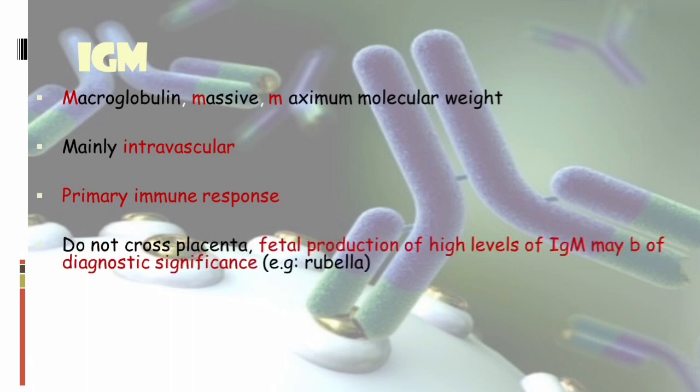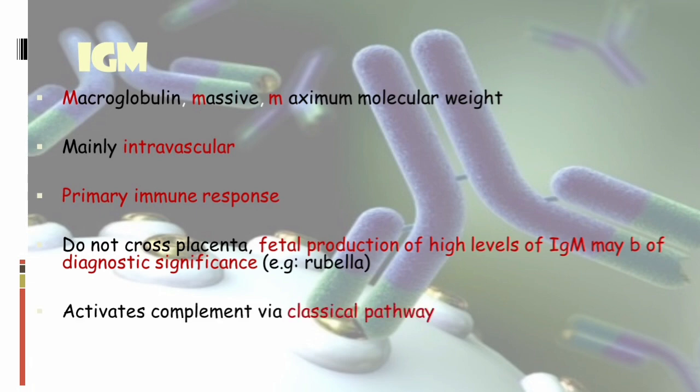IgM does not cross the placenta. So if we examine a fetus and IgM levels are high, it shows the fetus itself is producing IgM, which is suggestive of some type of infection in the fetus — because maternal IgM won't be present in the fetus. IgM activates the complement via the classical pathway. So IgG and IgM both activate the classical pathway — remember 'General Manager is very classic' — and the alternative pathway is IgA.